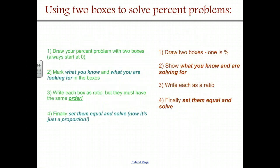In slightly easier and less verbose language, our steps are 1, draw two boxes, 1 is always your percent. 2 is show what you know and what you're solving for. 3 is write each as a ratio. And 4 is set them equal and solve as a proportion.